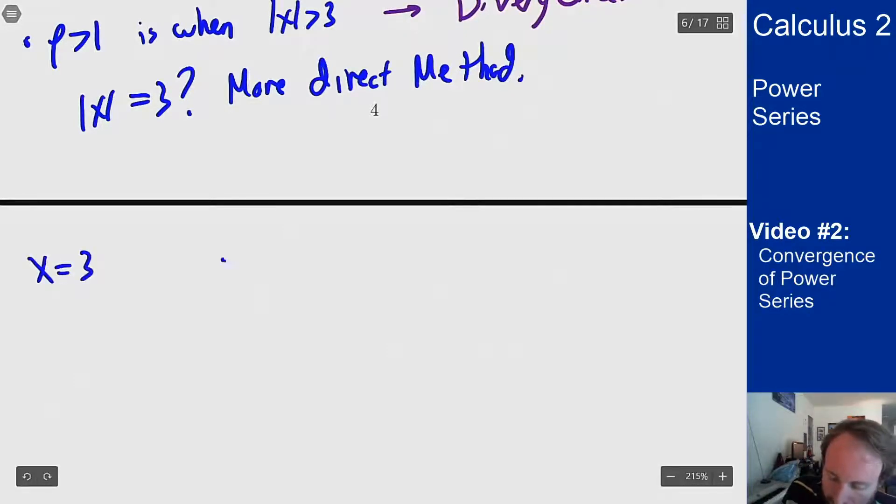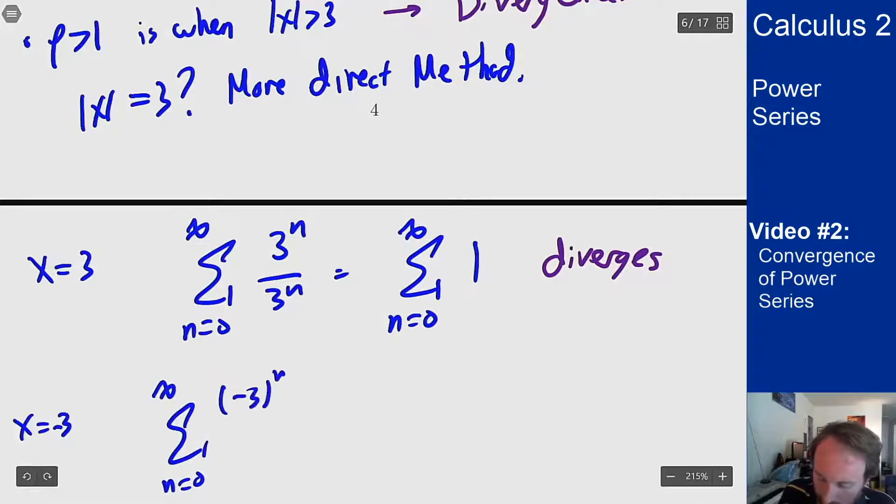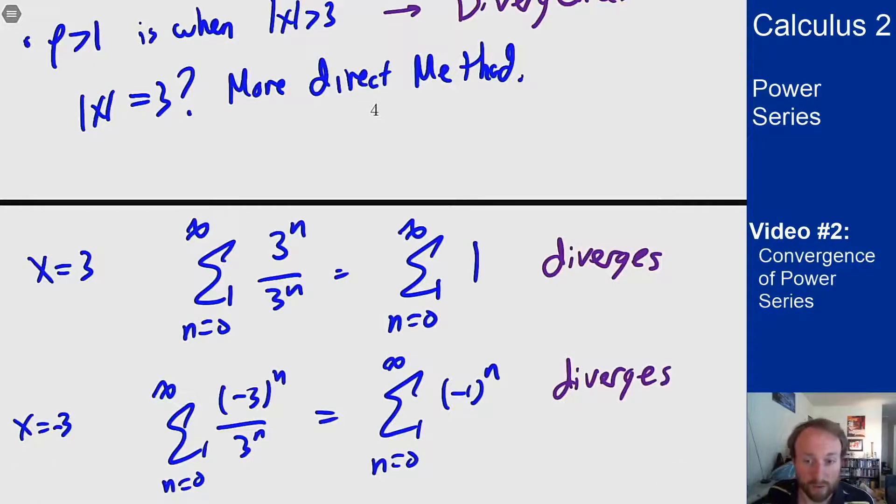When x is 3 my series becomes sum n from 0 to infinity of 3 to the n over 3 to the n, which is sum n equals 0 to infinity of 1 which diverges. Similarly for x equals minus 3, I get n equals 0 to infinity of minus 3 to the n over 3 to the n, which is sum n equals 0 to infinity of minus 1 to the n which also diverges, in both cases because the terms do not go to 0. We're using our nth term divergence test because these don't go to 0 the series cannot converge.